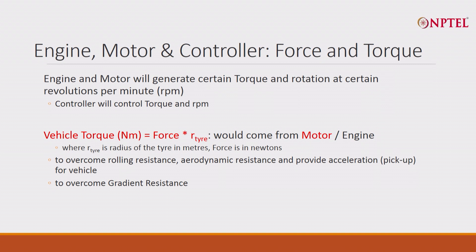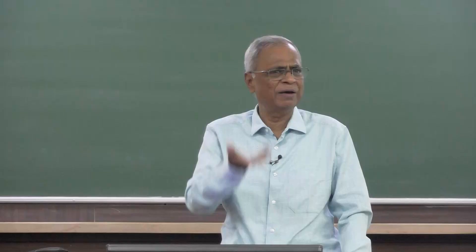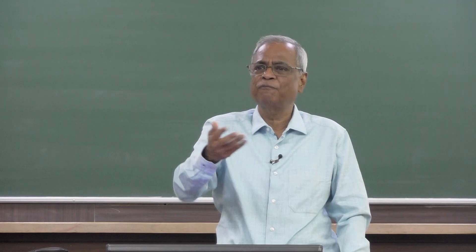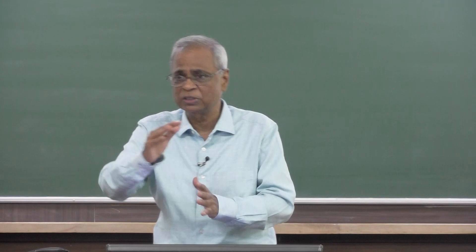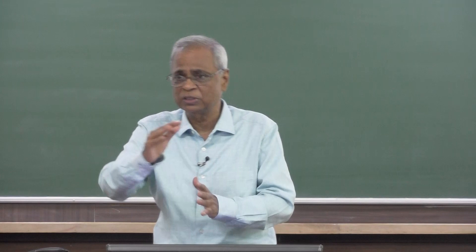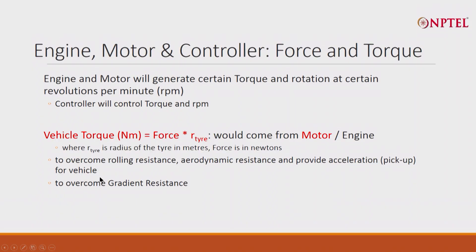These two resistances — rolling and aerodynamic — must be overcome by applying torque or force. When you accelerate by pressing the accelerator, you need additional torque or force, since force equals mass times acceleration. The next important reason torque is required is gradient resistance: when you move uphill, you require more force because you are going against gravity. So the total resistance is a combination of rolling resistance, aerodynamic resistance, acceleration, and gradient resistance.